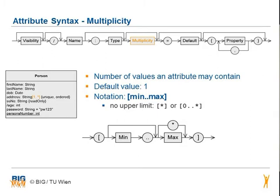The default number of values that an attribute may contain is 1. If you want to change that, you can set a minimum and a maximum number of values. The star means that there is no maximum number.